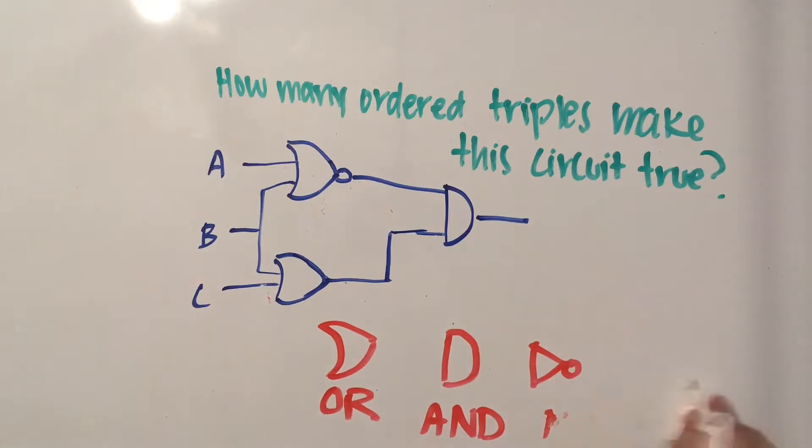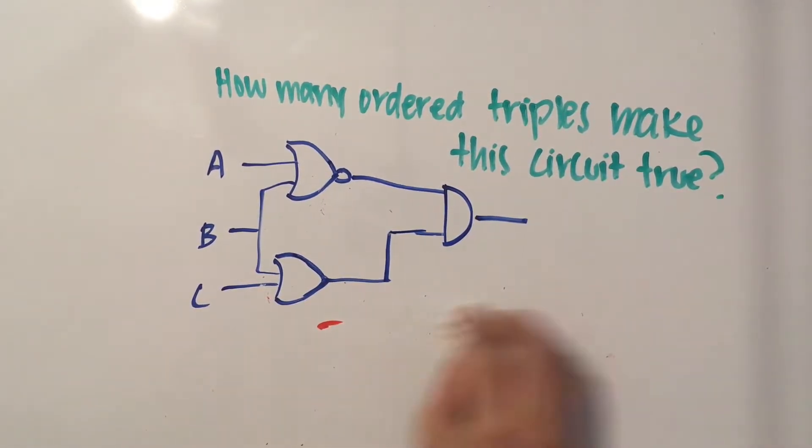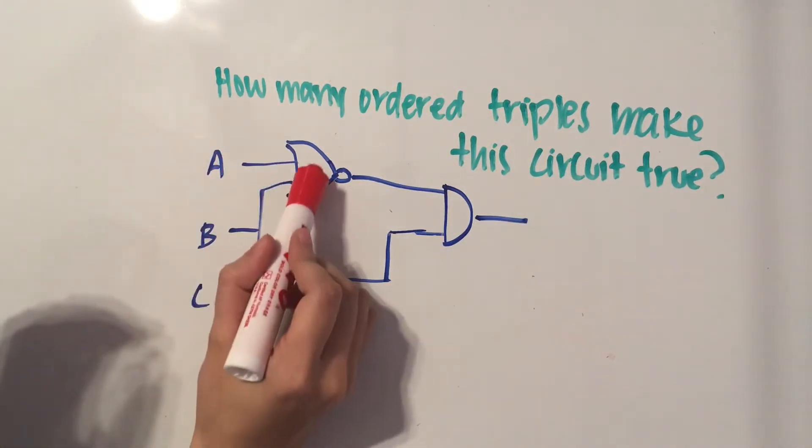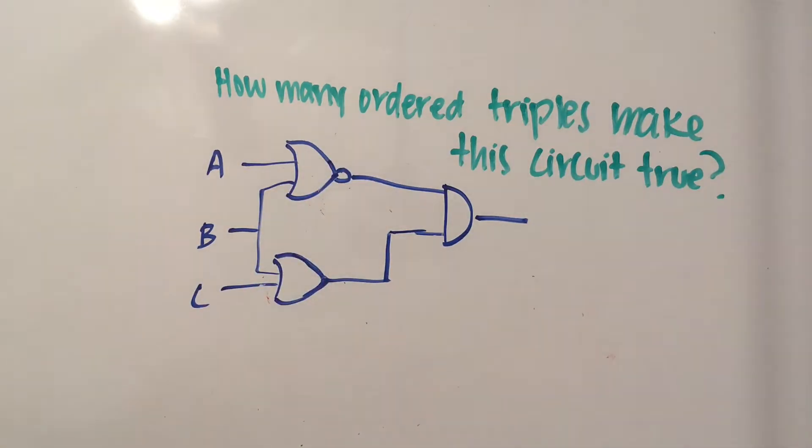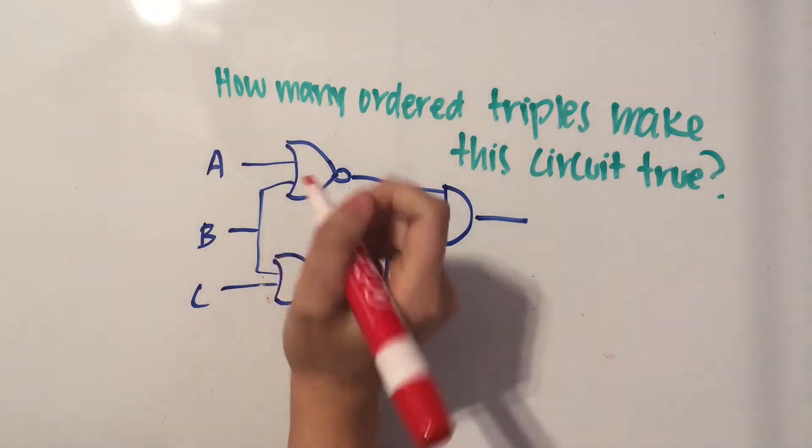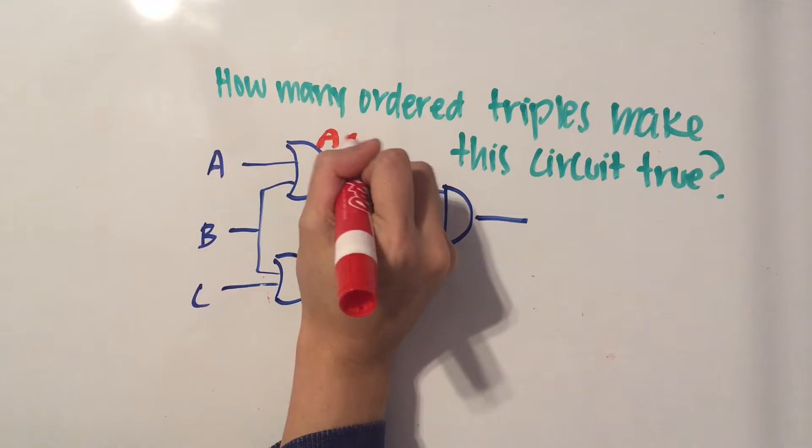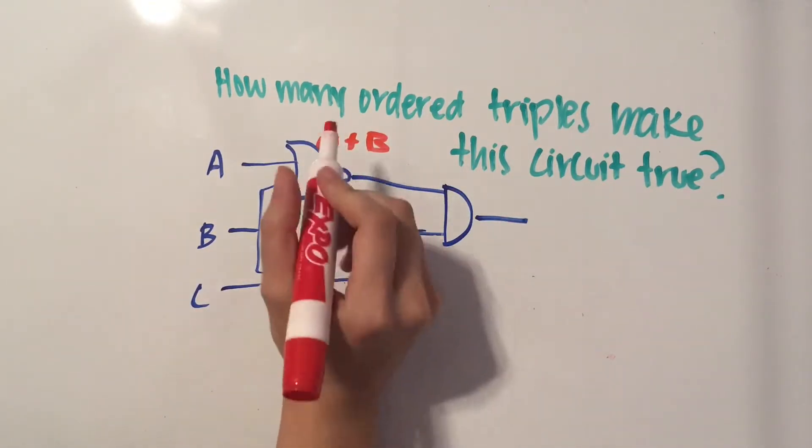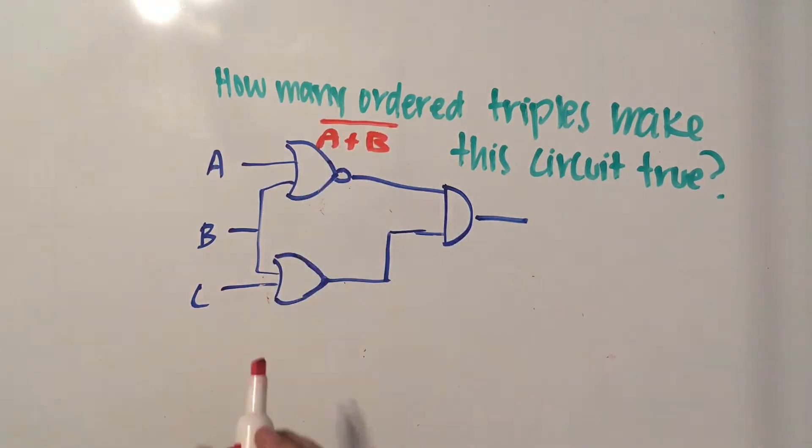So what we have to do is trace through the wires and see which variables they run through. So A is connected and B is also connected to this. So we're going to write A or B, because remember this is an OR gate, and then we have this little dot saying that we should put a NOT over it.